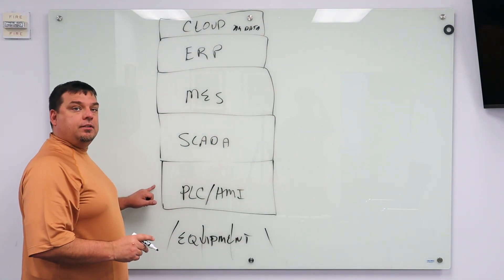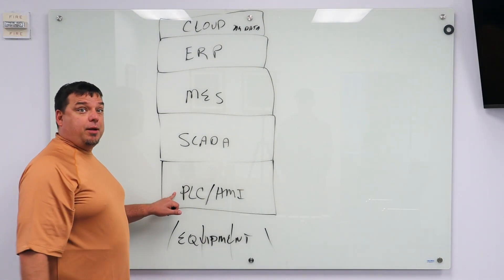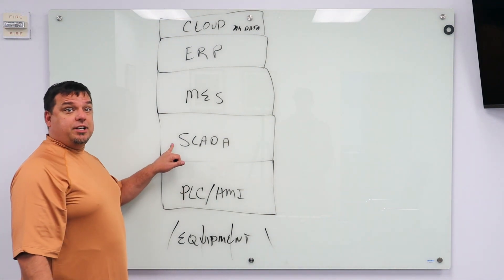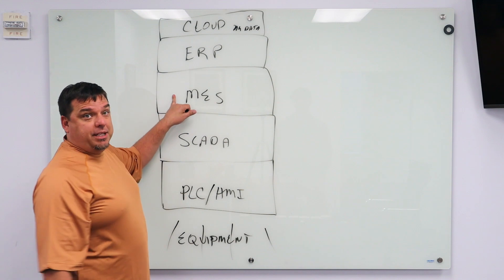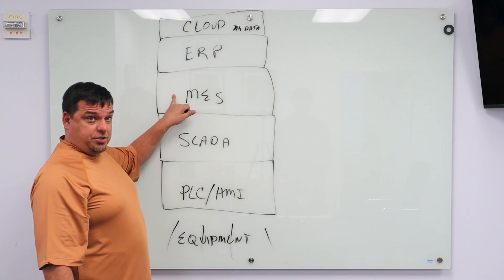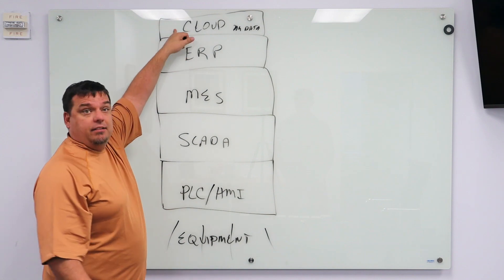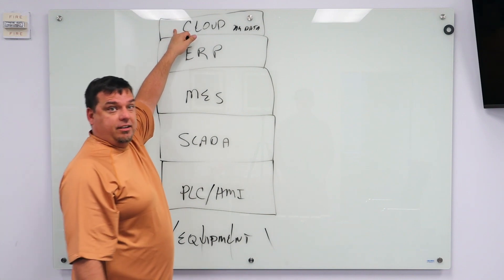Are all the acronyms going up? PLC, HMI: programmable logic controller and human machine interface. SCADA is supervisory control and data acquisition. MES is manufacturing execution system. ERP is enterprise resource planning. And this is cloud-based big data analytics algorithms.